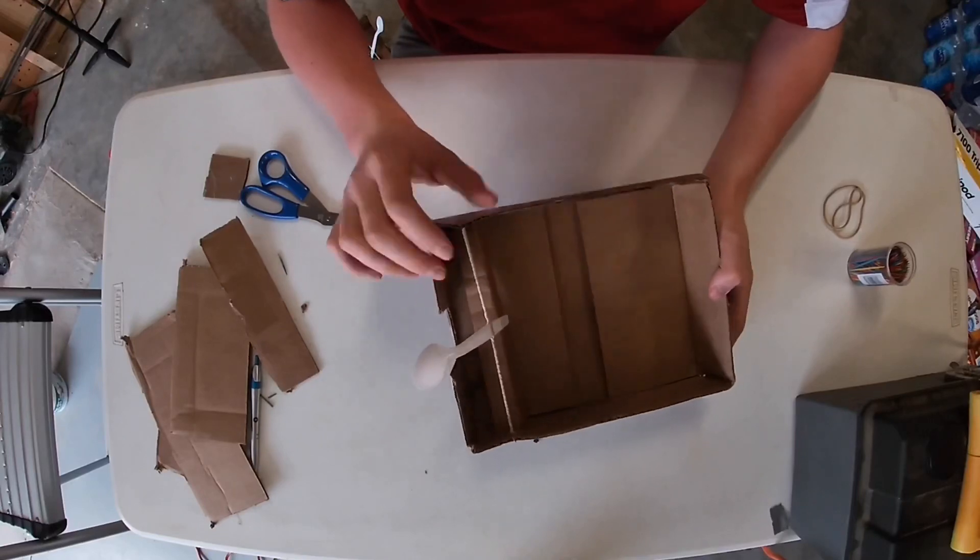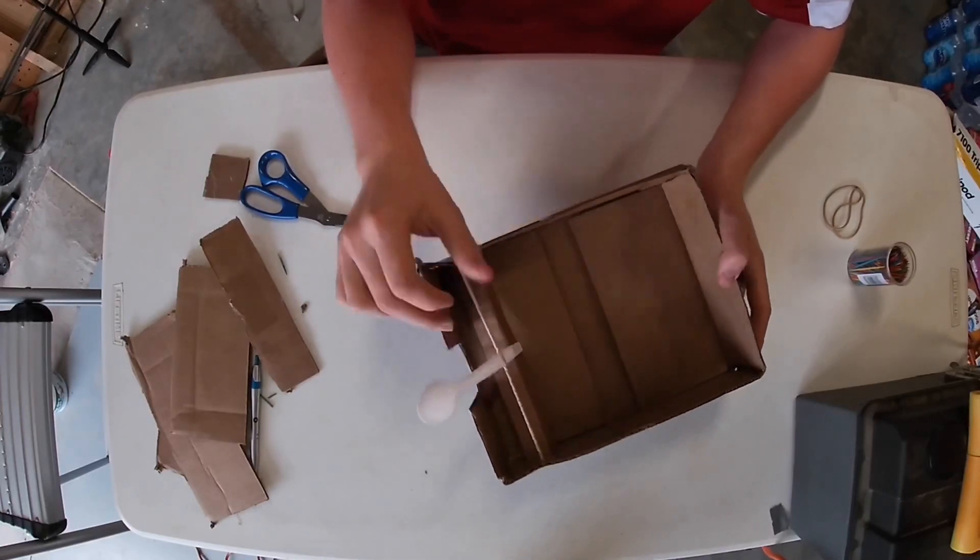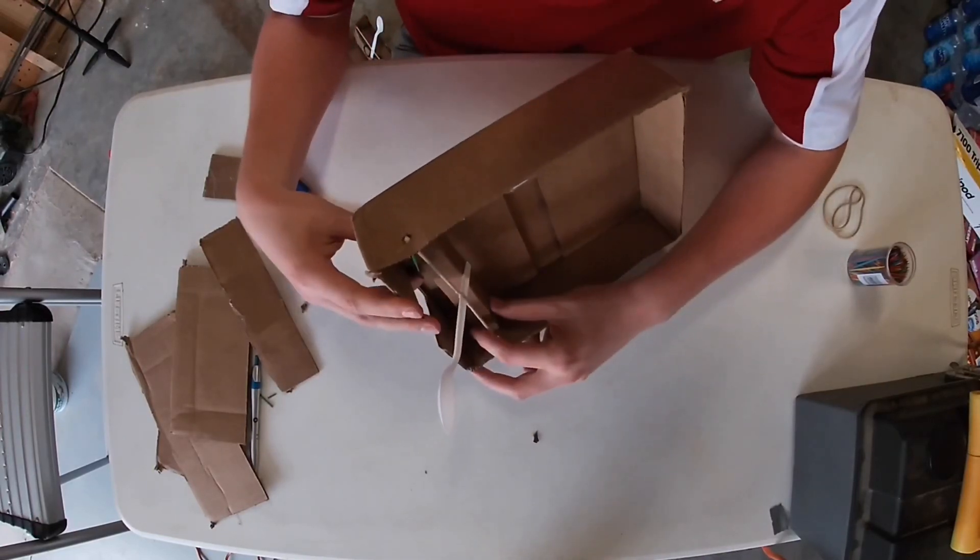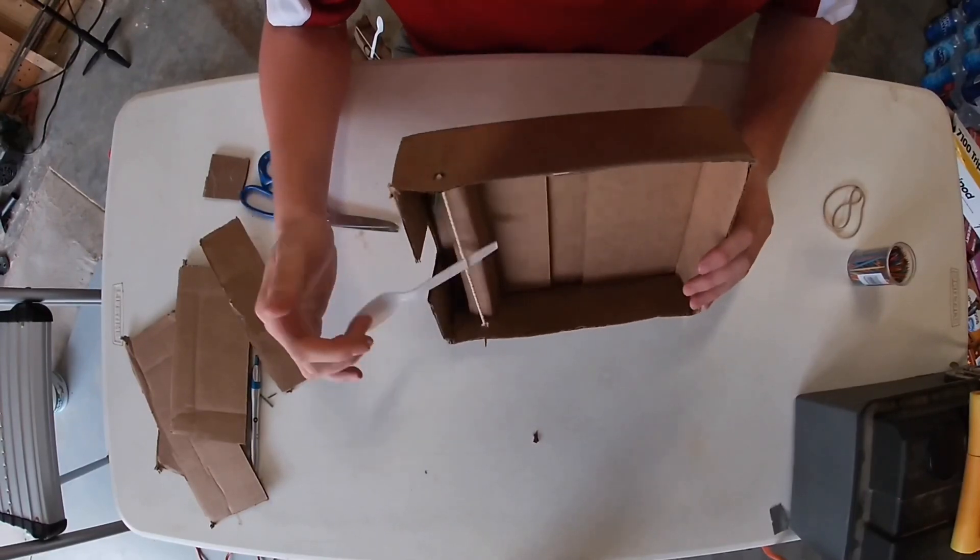Now you can tweak the power by twisting this rubber band up more or by moving your stopper forward or backward to change the angle of the spoon.